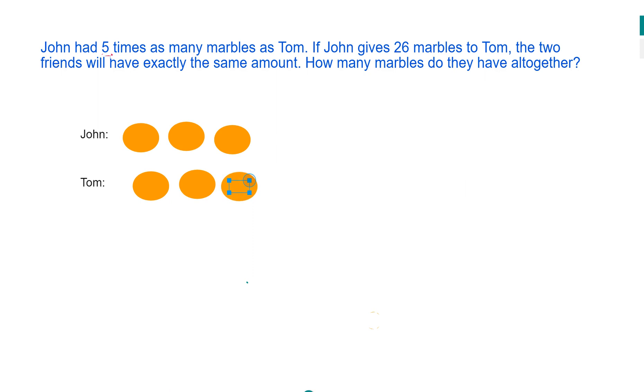So those two counters which John gave to Tom is equivalent to 26 marbles. Here you have 26 marbles. Because he gave two counters, that means each counter will be worth 13 marbles.